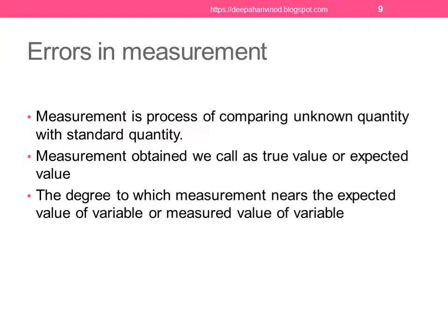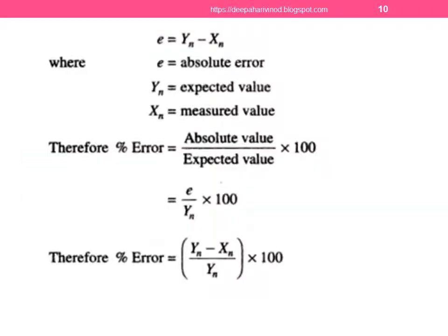Errors in measurement. Measurement is the process of comparing unknown quantity with the standard quantity. The measurement obtained we call true value or expected value. To calculate the error, E is the error given by Yn minus Xn. E is the absolute error, Yn is the expected value, and Xn is the measured value. Percentage error is given by absolute value divided by expected value times 100. Therefore, percentage error equals E divided by Yn times 100, or Yn minus Xn divided by Yn times 100.